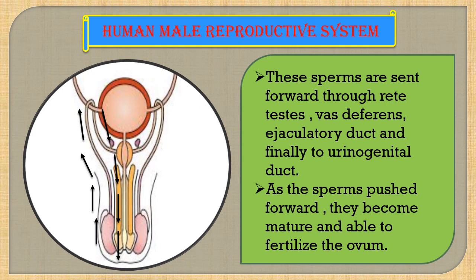The main function of the testes is to produce sperms, that is male gametes. The sperms are produced in both testes and are temporarily stored in the epididymis, which is just above the testes. When they are transferred to the next duct, at that time they become matured. Finally, when they pass through the prostate gland, seminal vesicles, and Cowper's gland, these sperms get matured and finally there is a formation of semen.